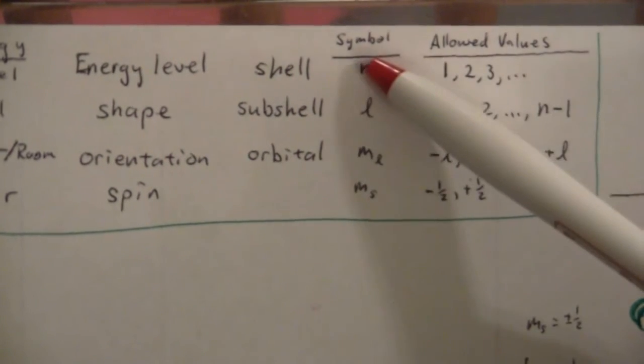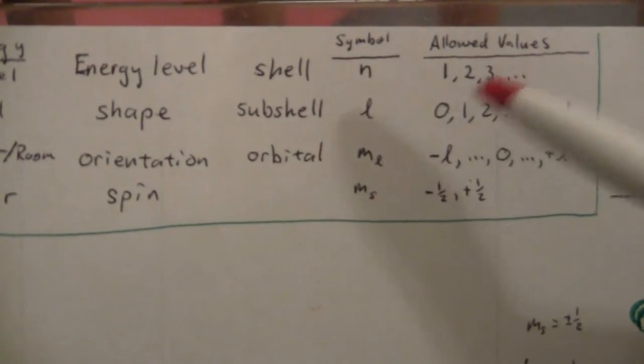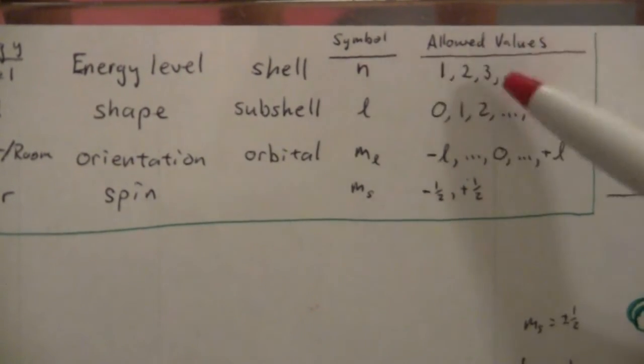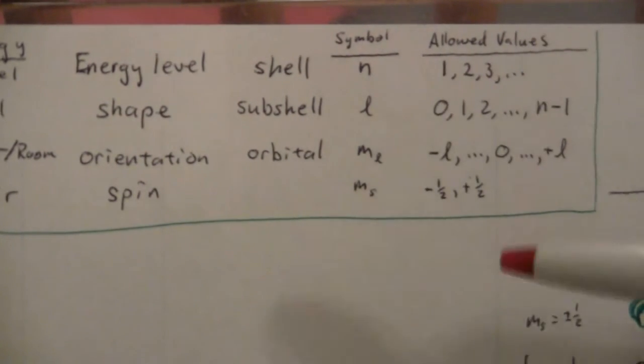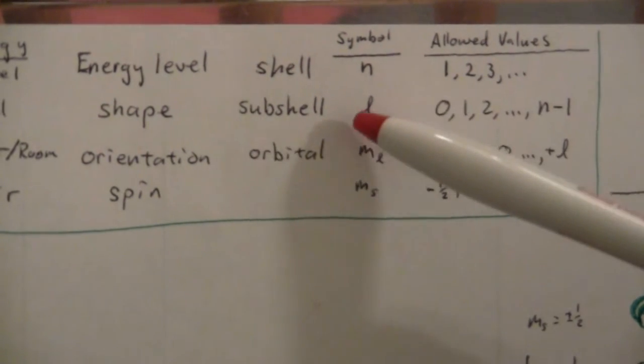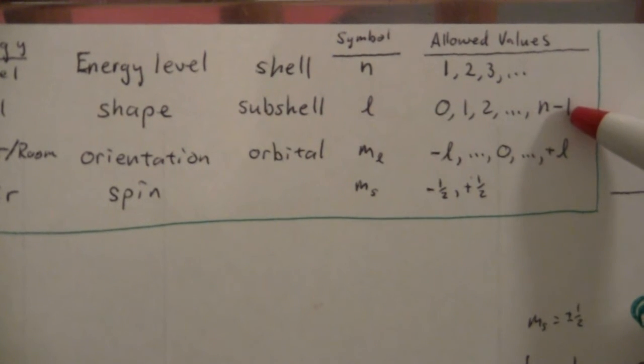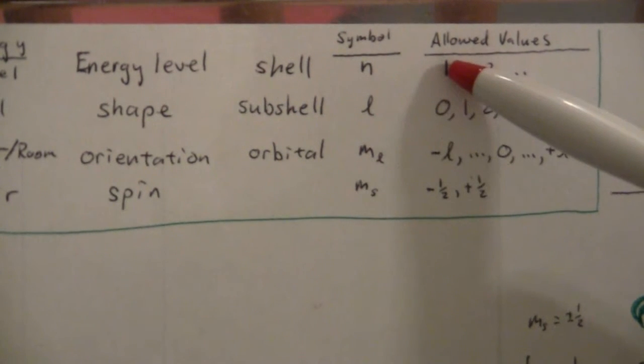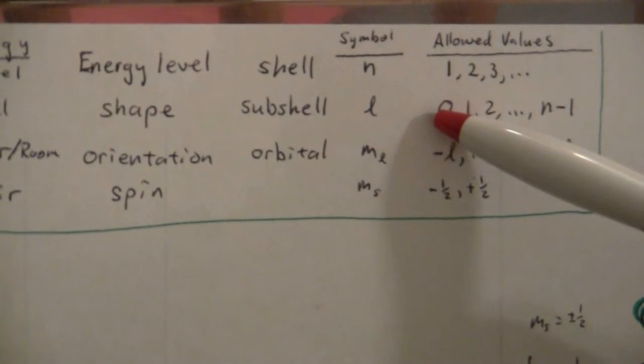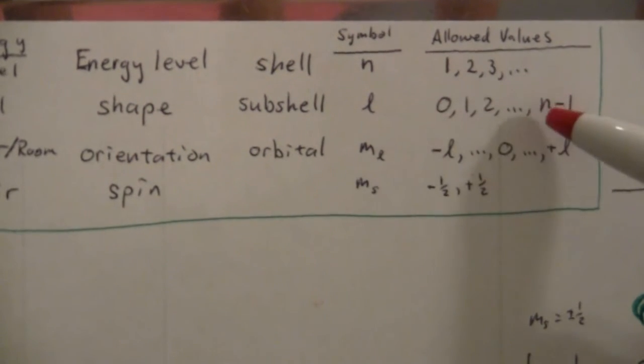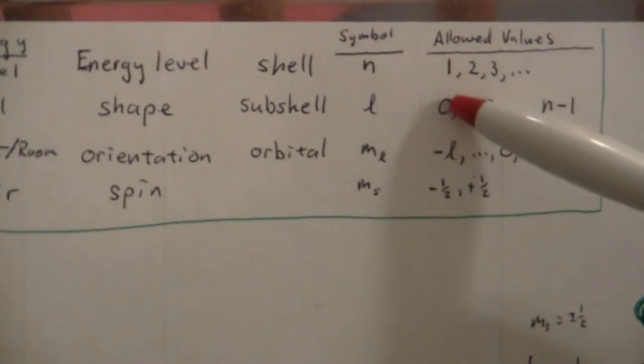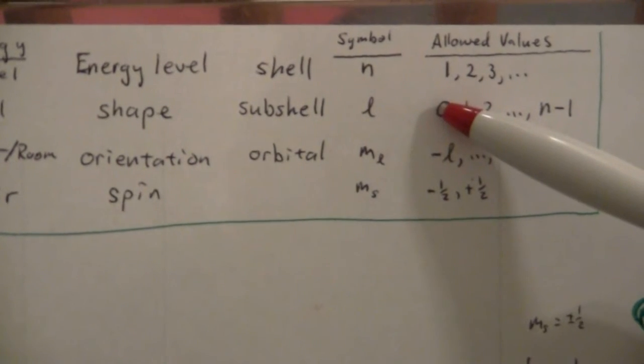Here are the allowed values. N, the shell, can be 1, 2, 3, and up to whatever you need. Then L starts at 0, and it goes up to N minus 1. So if N is 1, L can go from 0 to 1 minus 1, which is 0, so it can't be beyond 0.